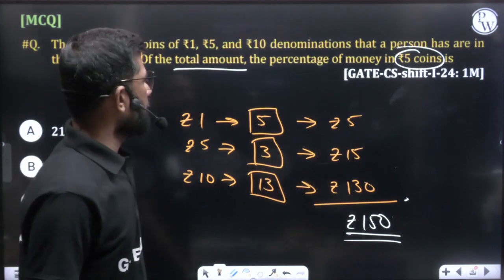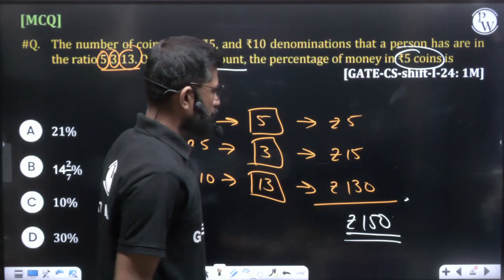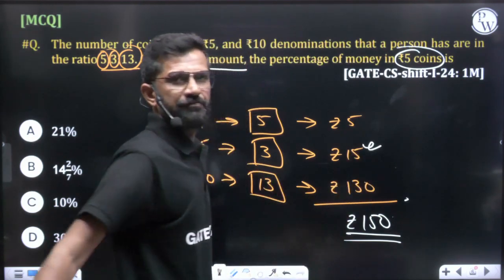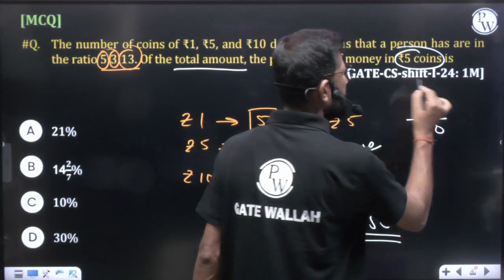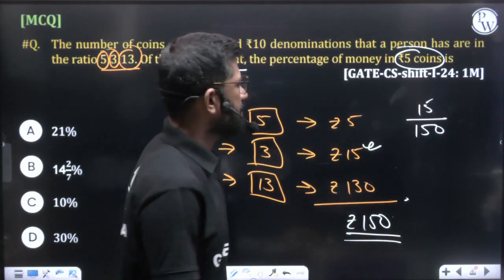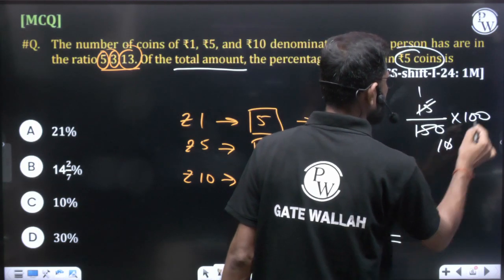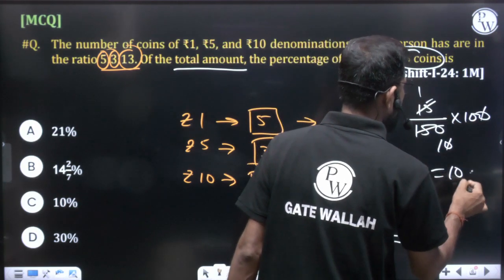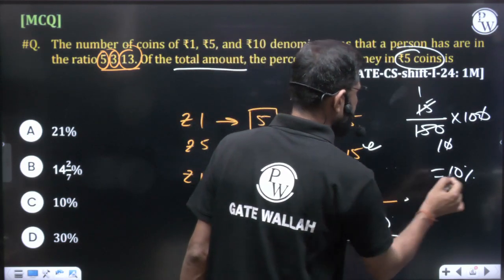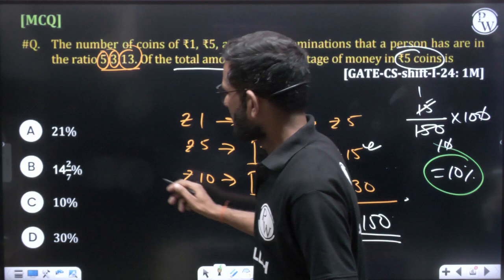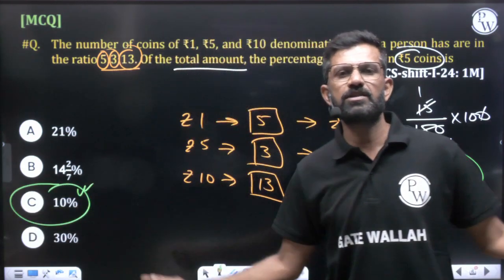Out of this total amount, they are asking the percentage of money that ₹5 coins represent. The ₹5 coins hold ₹15, so out of ₹150, ₹15 is what percentage? That works out to 10%. So the ₹5 coin amount is 10% of the total amount, which is given in option C — so this is our answer.